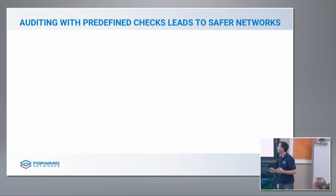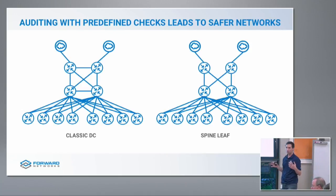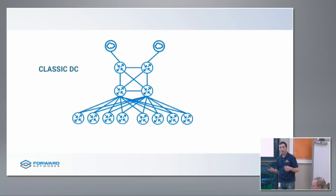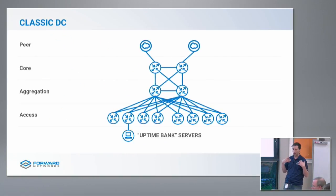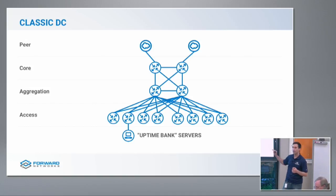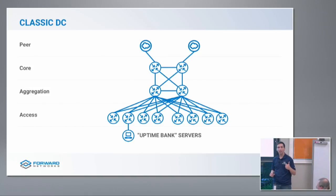We're going to demonstrate that using two real networks. Both of these networks come from real customer usages, and both had real outages. Imagine for a minute that I'm the administrator for this classic data center. I have one customer that's really, really important to me: Uptime Bank. They've been with me for 15 years, they pay me more than any other customer, and in those 15 years, they've never had an outage.